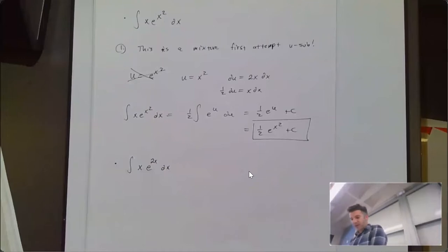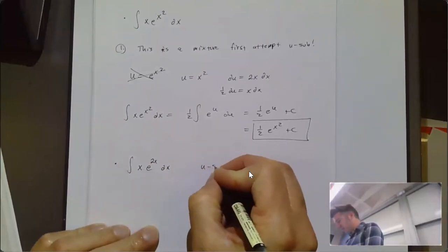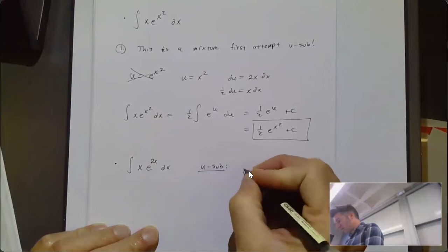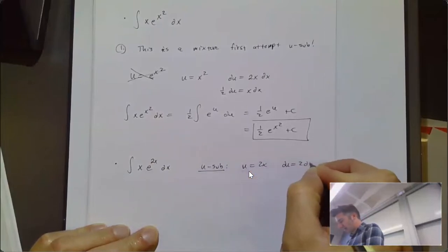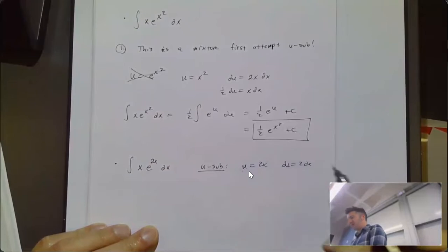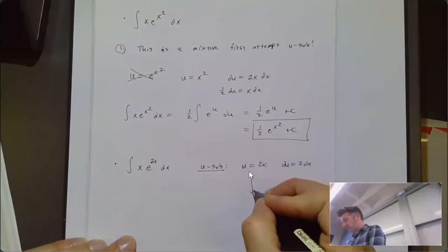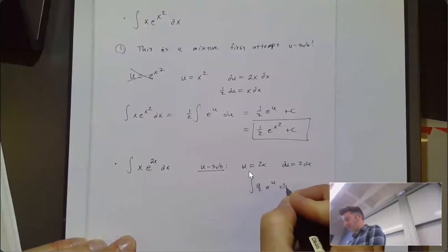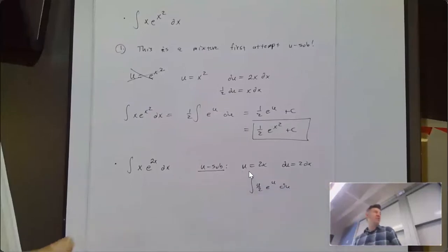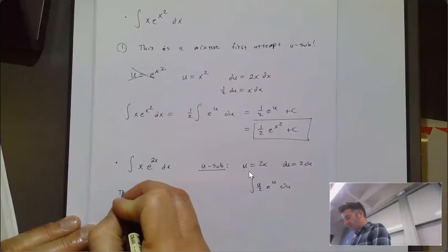If I try u equal 2x, du equals 2 dx, but I still have an x there, so it becomes the integral of u/2 · e^u du, which is essentially the same. So it's probably not going to be u-sub; we probably need to try integration by parts.